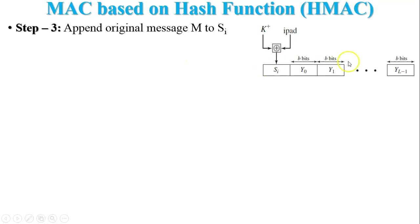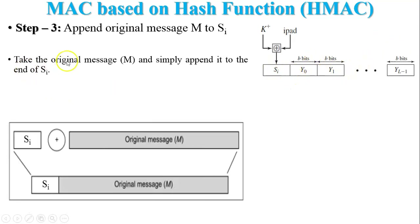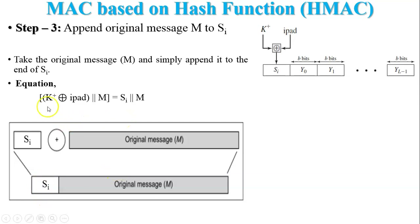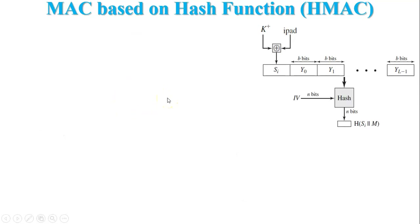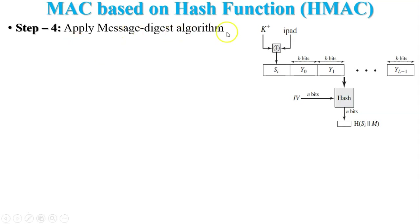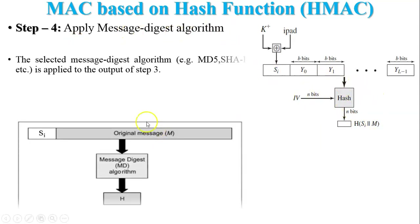Step 3: the secret value Si is appended to the original message M. In this figure, the original message is divided into fixed-size blocks, and these blocks are appended with the secret value Si. We take the original message M and simply append it to the end of Si. Our equation is: (K+ XOR ipad) || M, or equivalently Si || M.